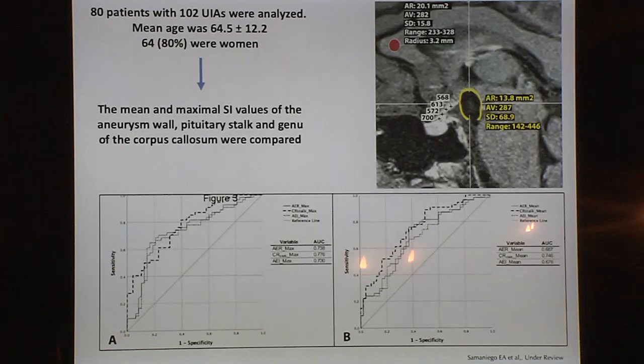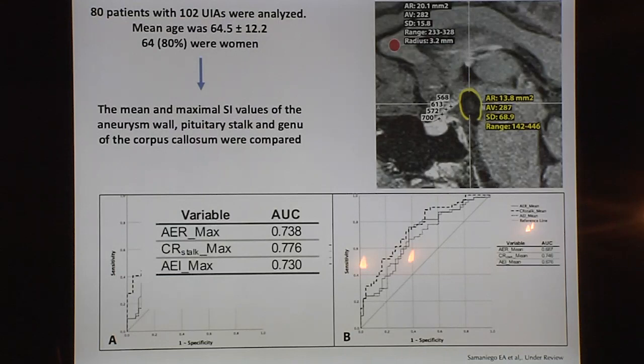This paper is being published in the Journal of Neurostrology. We looked at our database of 102 unruptured intracranial aneurysms and performed all the measurements — T1 pre, T1 post, normalization with corpus callosum, and normalization with pituitary stalk. The best result — the most reliable area under the curve — was normalization with the pituitary stalk.